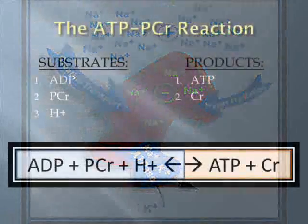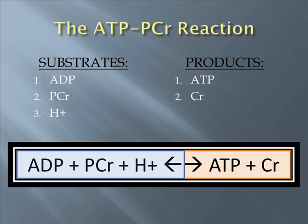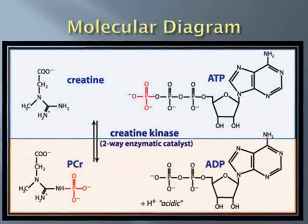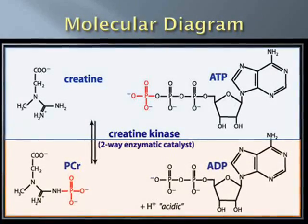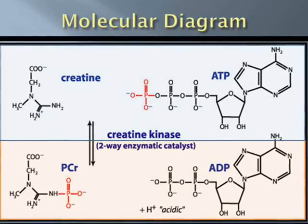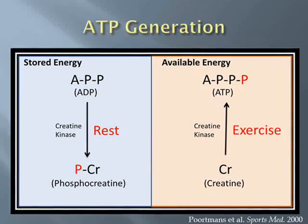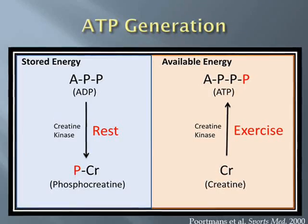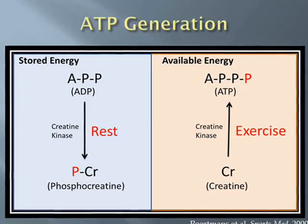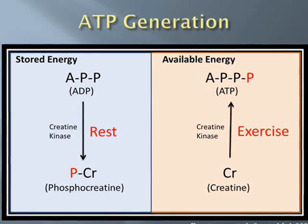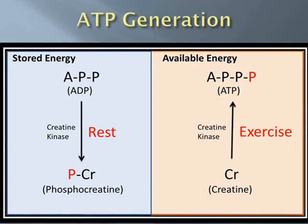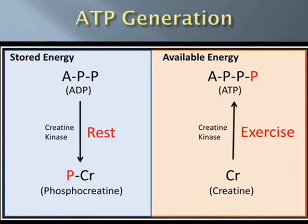The ATP-phosphocreatine reaction is dependent on the substrates adenosine diphosphate, phosphocreatine, and a positively charged hydrogen ion. This reversible reaction involves the formation of the products ATP and creatine. This cartoon demonstrates the role that creatine kinase, the regulating enzyme, plays in the interconversion of creatine and adenosine triphosphate to phosphocreatine and adenosine diphosphate by transfer of a single phosphate molecule. Note how energy demand determines the concentrations of creatine or phosphocreatine in the cell. At rest, when energy demand is low, most of the cellular phosphate is bound to creatine. When energy is needed, this phosphate is transferred to adenosine diphosphate via creatine kinase for energy use.